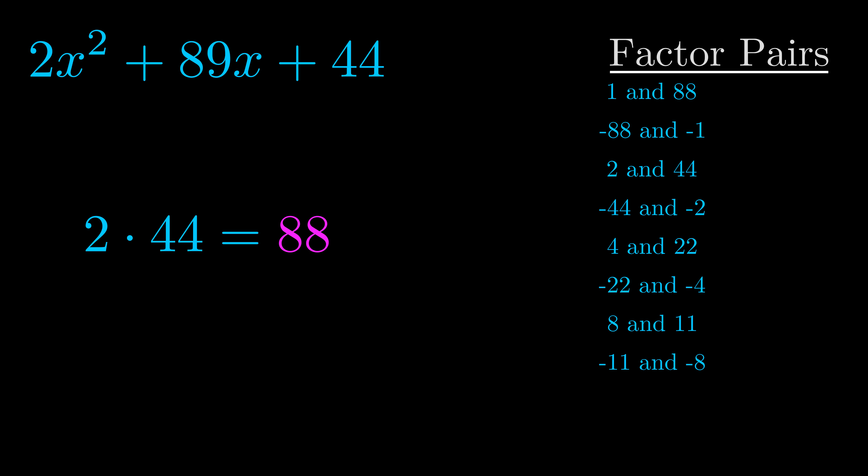Once you have these factor pairs, the goal is to find which of these pairs adds to the b value. The b value is the coefficient on the x term.